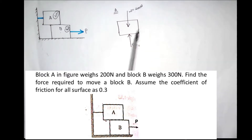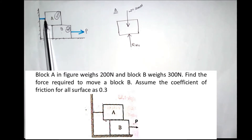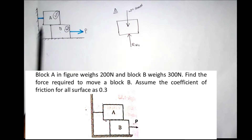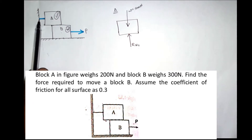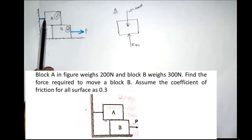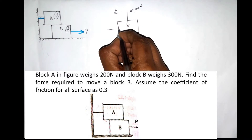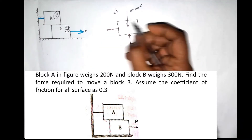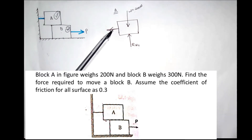Block A has an external force. The block is connected to a string on the surface. The force from the string is a tensile force. We mark that force and its direction.